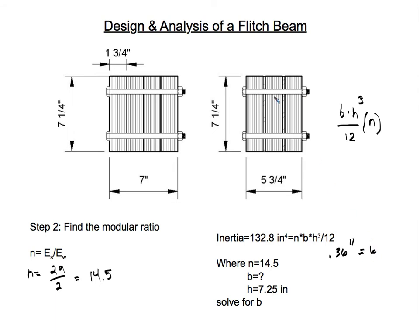Since 0.18 inches is very close to a quarter inch, we'll go with a quarter-inch plate on each side. So each plate is ¼ inch, which is typical — I've done this before and seen this in practice. That gives us our plate sizing: two ¼-inch steel plates.